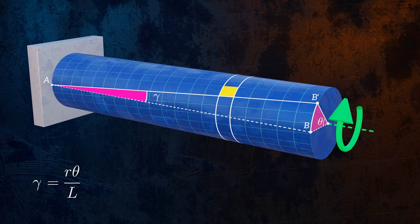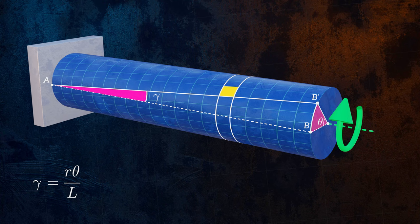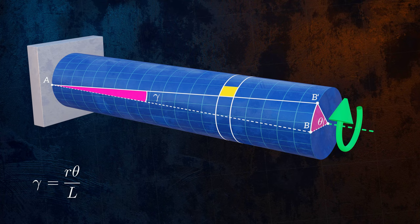This is actually only an equation for the shear strain on the surface of the bar. But what about inside it? It turns out that the shear strains increase linearly with the distance from the center of the cross section.